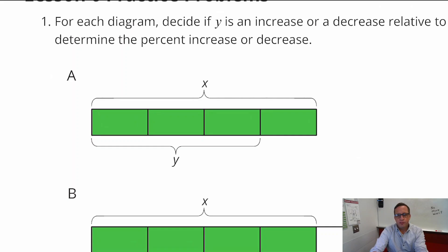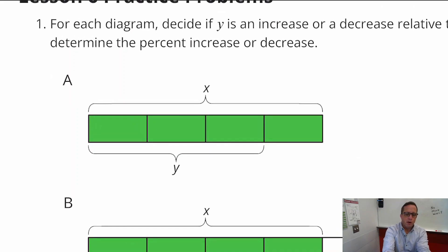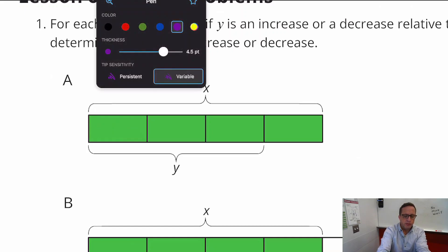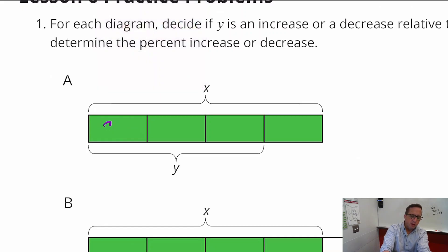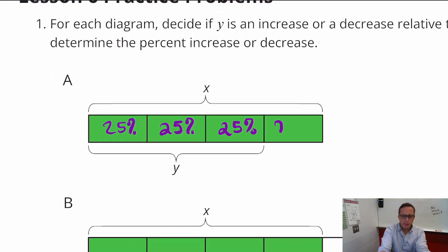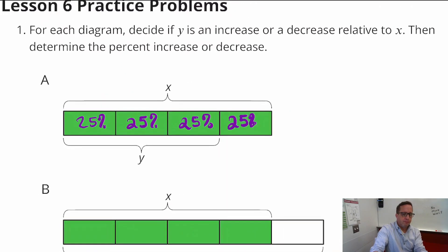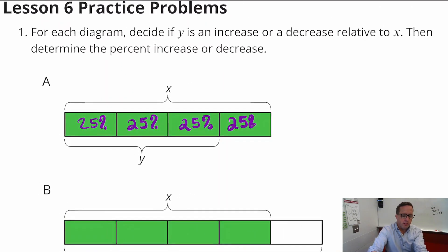Since it's broken up into four parts, we can safely assume each one of those parts is 25%. Each one is a fourth, and a fourth translates into 25%. So the percent decrease is a 25% decrease.